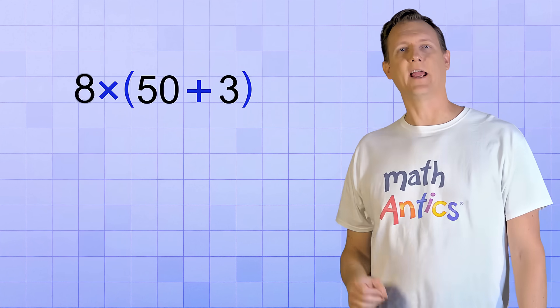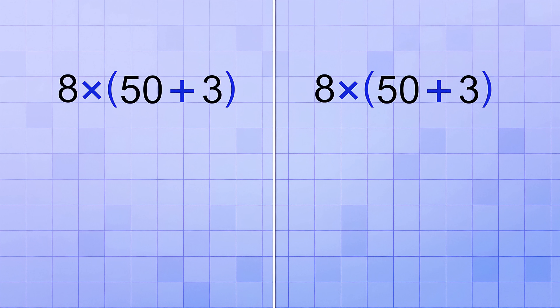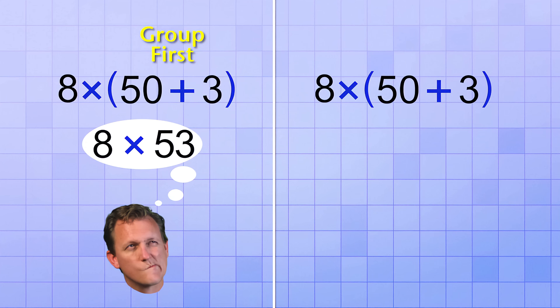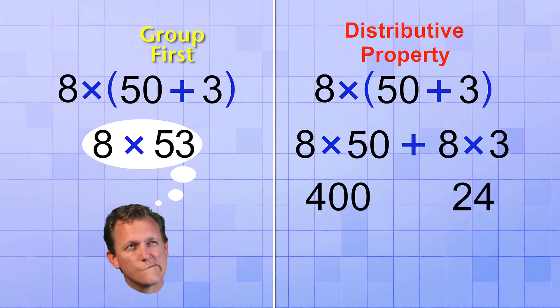Like in this case, 8 times the group 50 plus 3. If we decide to simplify the group first in this problem, we end up needing to multiply 8 times 53, which is not so easy to do mentally. But if we apply the Distributive Property instead, we can change the expression into 8 times 50 plus 8 times 3, and that's easier to do mentally. 8 times 50 is 400, and 8 times 3 is 24. So the answer is 424.